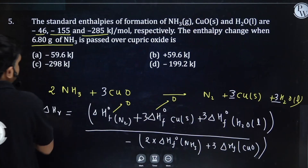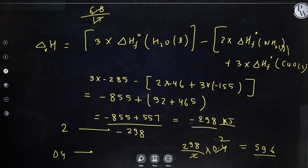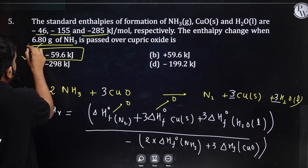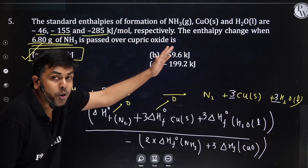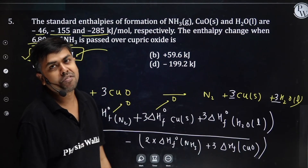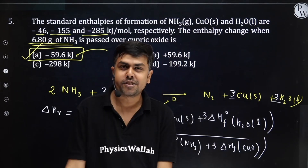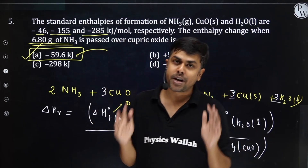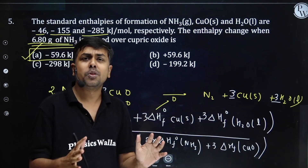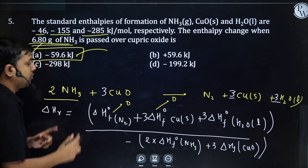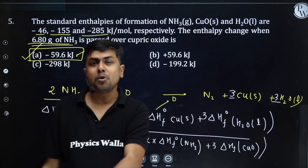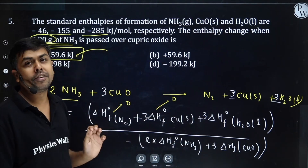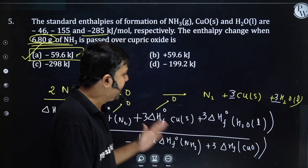The enthalpy change when 6.8 g of NH3 is passed over cupric oxide is −59.6 kJ. Option A is the correct answer. The method: first calculate ΔHr° for the balanced equation, then scale proportionally based on moles of NH3. Here 2 moles of NH3 gives ΔH = −298 kJ, so 0.4 moles gives −59.6 kJ.